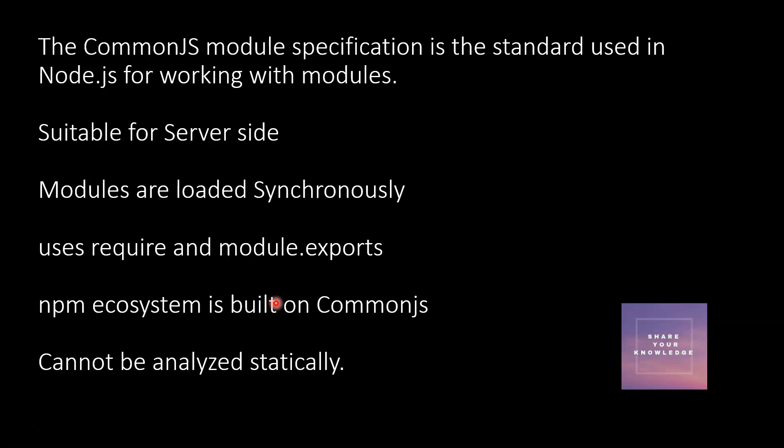At build time, bundlers cannot determine what things are exported from a CommonJS module. They can only find out at runtime, in the browser context. So bundlers cannot do tree shaking on these modules, meaning the CommonJS bundle is supposed to be larger than ES modules bundles.